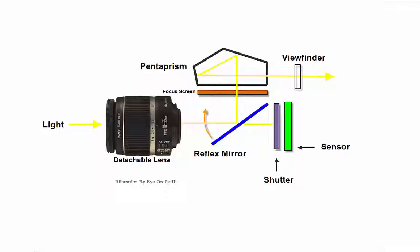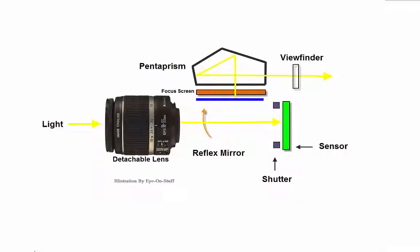When the shutter button is pressed to take a picture, the reflex mirror pivots upward and the shutter opens for the duration of the shutter speed setting, allowing light — the image — to fall on the sensor. The image is captured by the sensor, an image file is generated, and it is written to the camera's memory card.